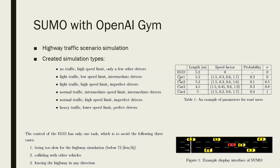The ego vehicle is chosen from the existing vehicles randomly. As the ego is controlled, it does not apply the car-following model, has no speed limit, and control is fully given by the Python control script and the TraCI interface. The created basic setup has 6 different scenarios with 6 different limitations of maximum speed, different density, and types of surrounding vehicles.